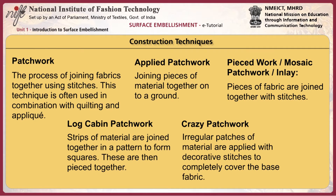The patchwork process joins fabrics together using stitches, often used in combination with quilting and applique. There are four main methods. In applied patchwork, pieces of materials are applied and joined to a ground. In piecework or mosaic patchwork, pieces of fabric are joined together with stitches. In log cabin patchwork, strips of materials are joined together in a pattern to form squares, which are then pieced together. In crazy patchwork, irregular patches of materials are applied with decorative stitches to completely cover the base fabric.